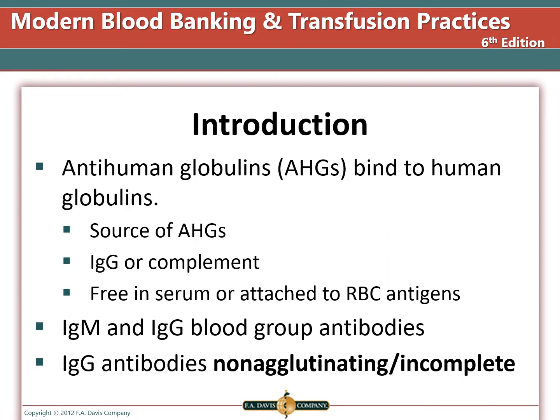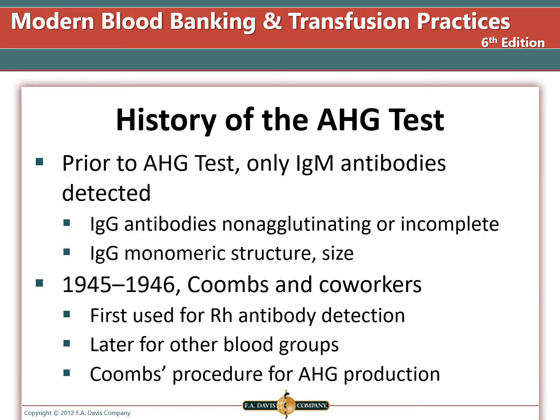When we say sensitized, we mean that the cell is coated with antibodies or complement. Before this test was created, only the IgM antibodies to red cells such as those of the ABO system could be detected. To be able to agglutinate red cells coated with the smaller IgG antibodies, we need an additional step. In 1945-46, Coombs and co-workers used this method to detect the RH antibodies against the D antigen. Later, the test was adapted to detect antibodies to additional blood groups. Coombs developed a way to create the anti-human globulins, which is why we used to call it the Coombs test.